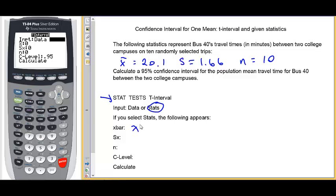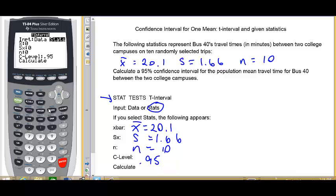X bar is 20.1, S is 1.66, N equals 10, and our confidence level is already there, 0.95. So we need to just input these values.